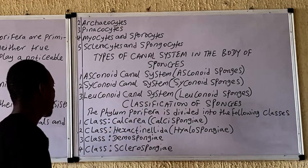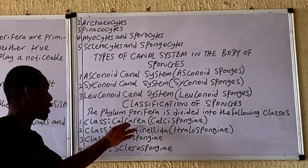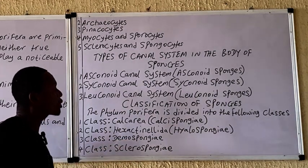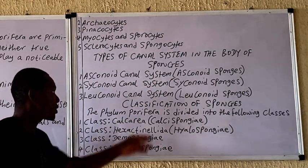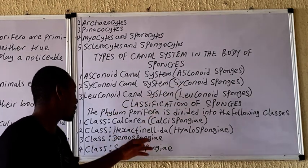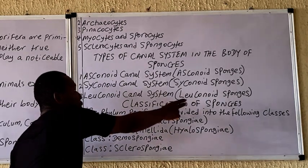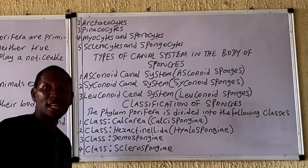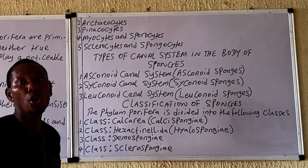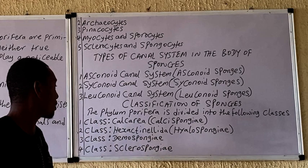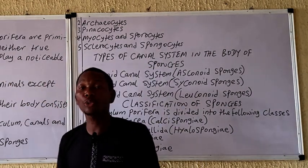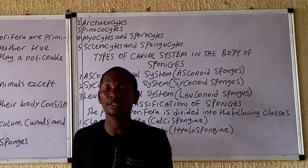Classification of sponges: sponges are classified into the following classes — class Calcarea, class Hexactinellida, class Demospongiae, and class Sclerospongiae. The asconoid sponges are majorly found in class Calcarea, while the leuconoid sponges are present in all the classes. Details of the various classes will be discussed in subsequent videos. This has been a brief summary of the Phylum Porifera. Thank you.